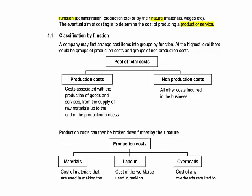We could split costs by function. The first thing in splitting costs by function is whether our costs relate to production or whether they're non-production. Production costs are the costs that exist because we have a factory — all of the costs incurred as that factory is run, from the supply of raw materials all the way through the production process. All of the other costs exist because we have a business, such as running the head office and the administrative and financial functions.